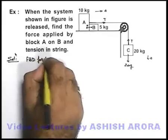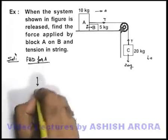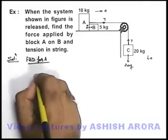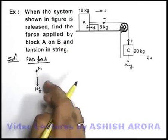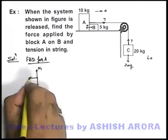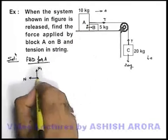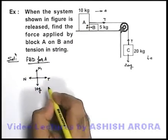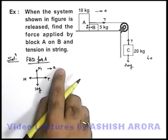For block A, B and C, if we draw it for block A, we can see in downward direction it will experience 10g. A normal reaction N1 is applied by ground on block. Toward left, it is the normal reaction which B is applying on A and toward right it is experiencing a tension T. And we also write the direction of acceleration that is toward right A.